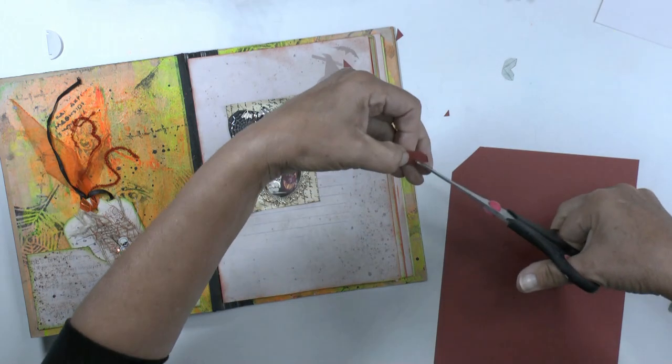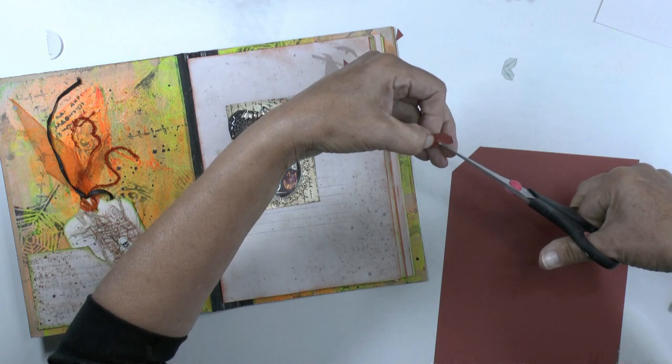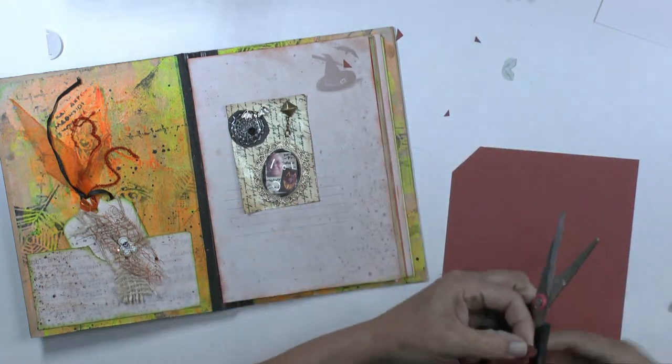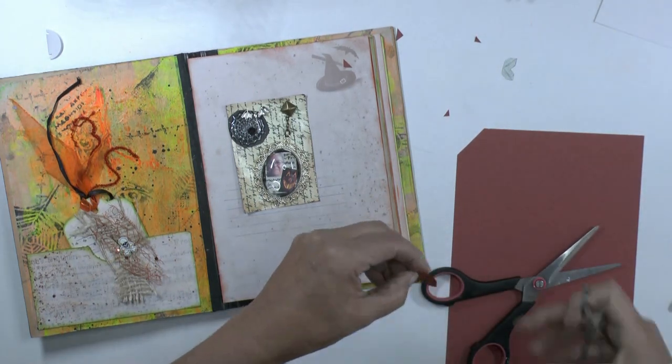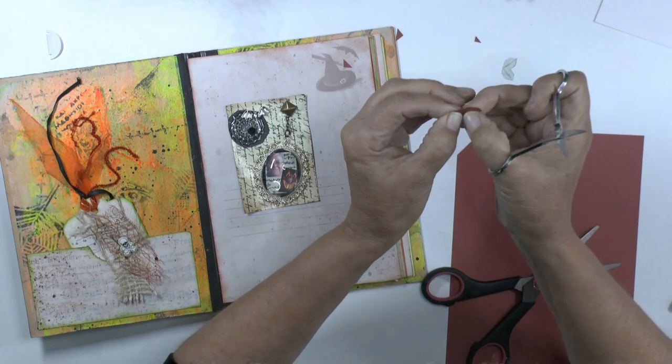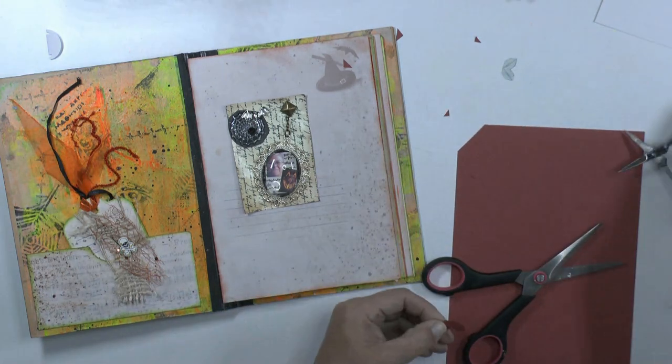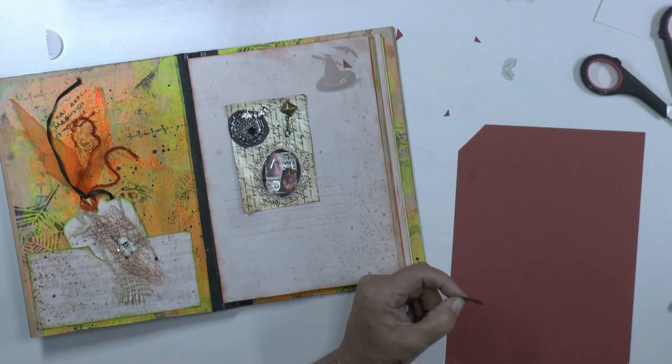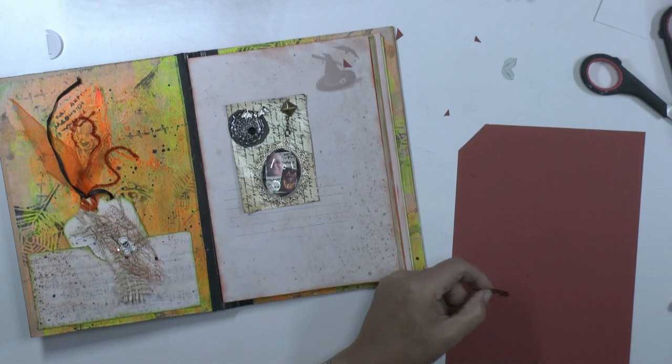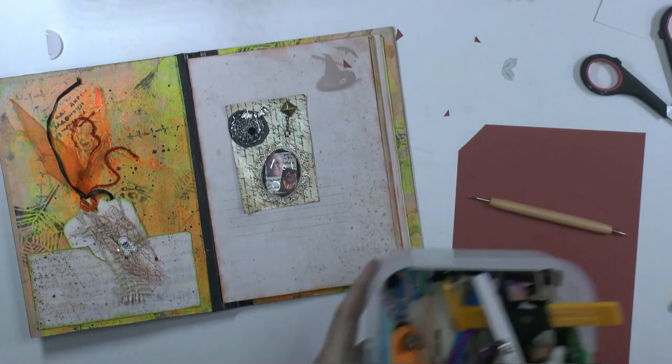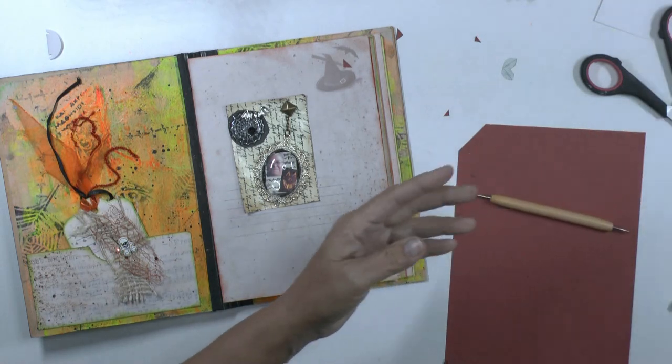And a little corner, and now I have to score it. That didn't go very well. And now I have to score two lines, and now I am going to do that with this tool and my ruler.